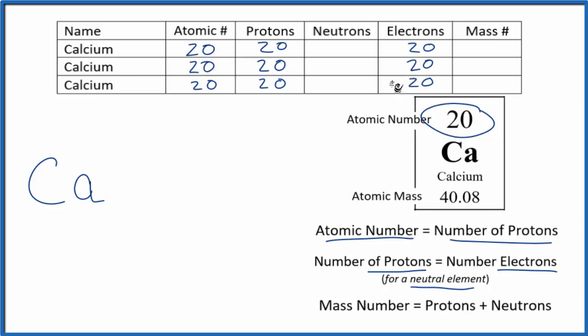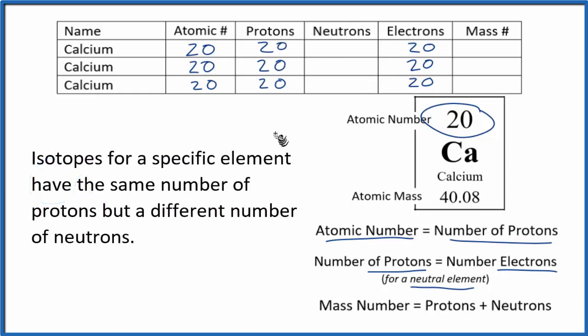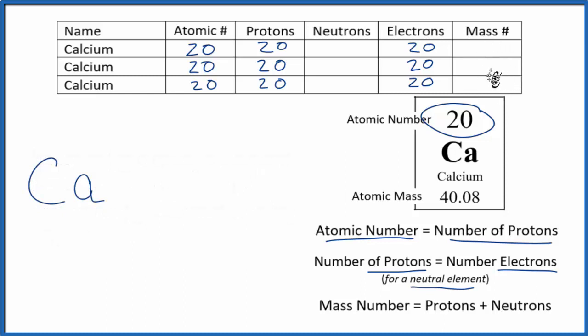The thing that's left now, and the thing that will be different, are neutrons. Isotopes have the same number of protons but different numbers of neutrons. So each of these will have a different number of neutrons. Protons plus neutrons equals mass number, so the mass number will be different too.